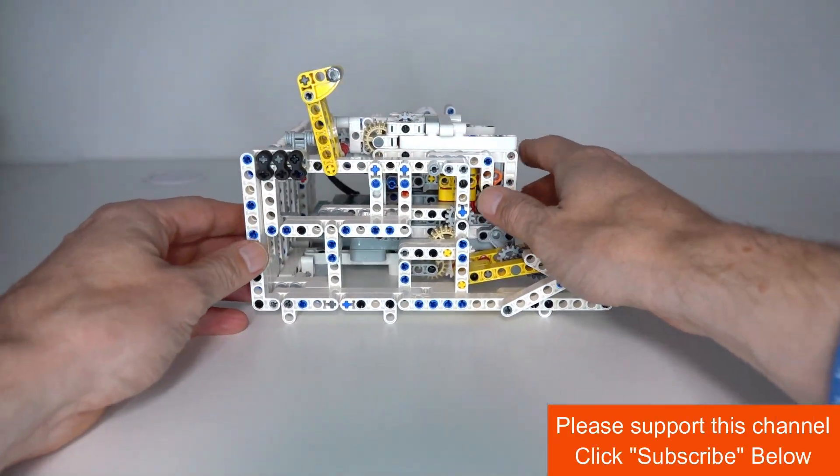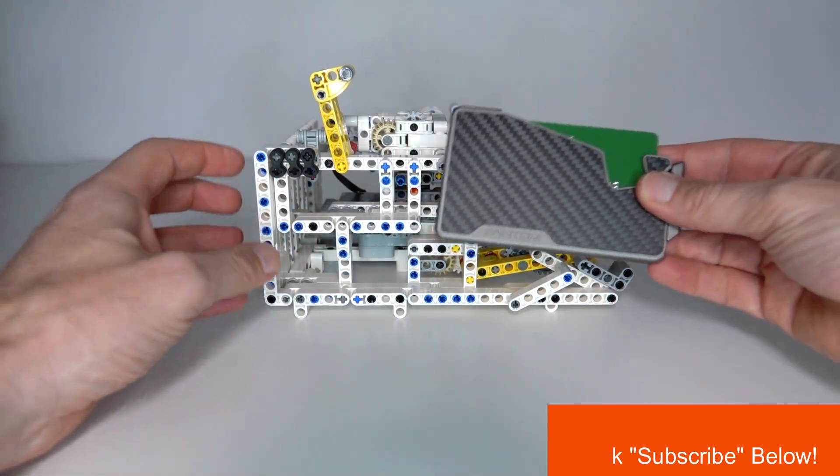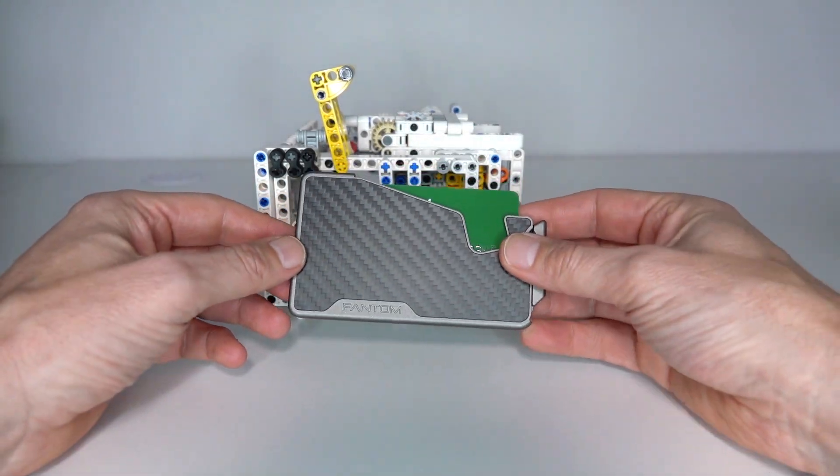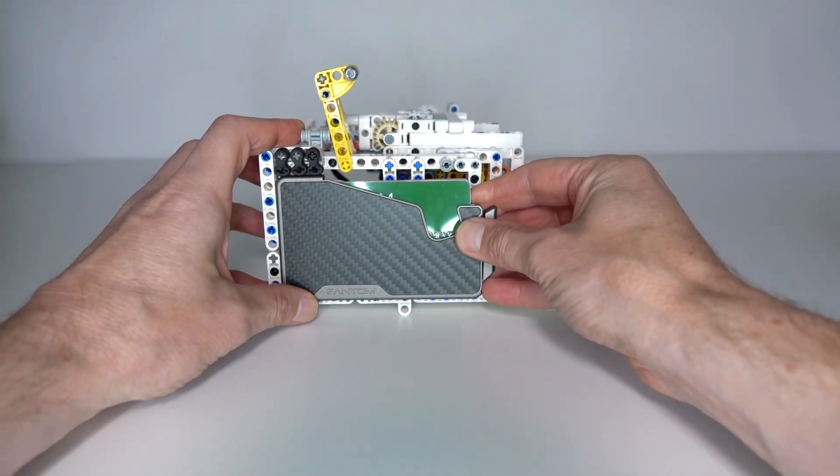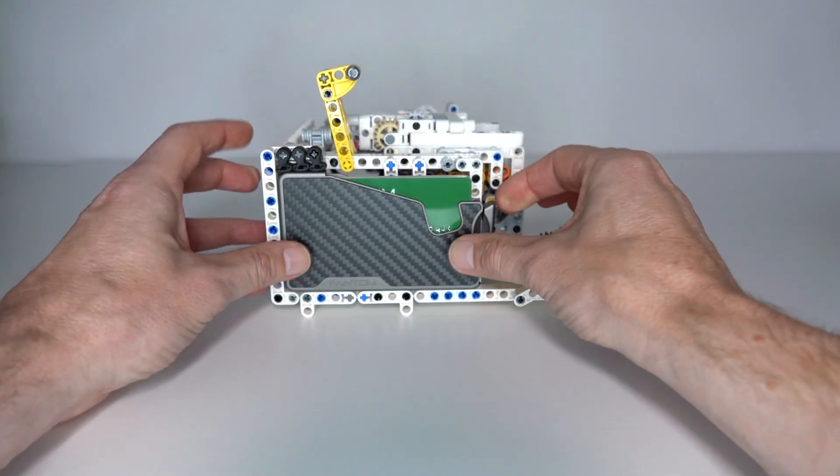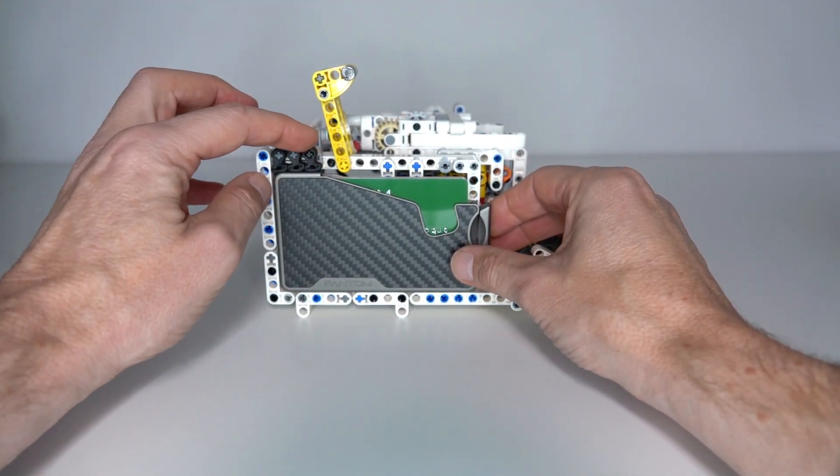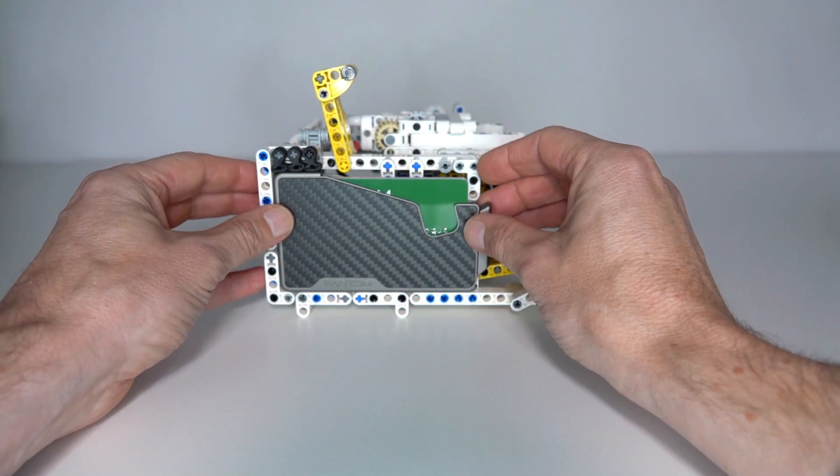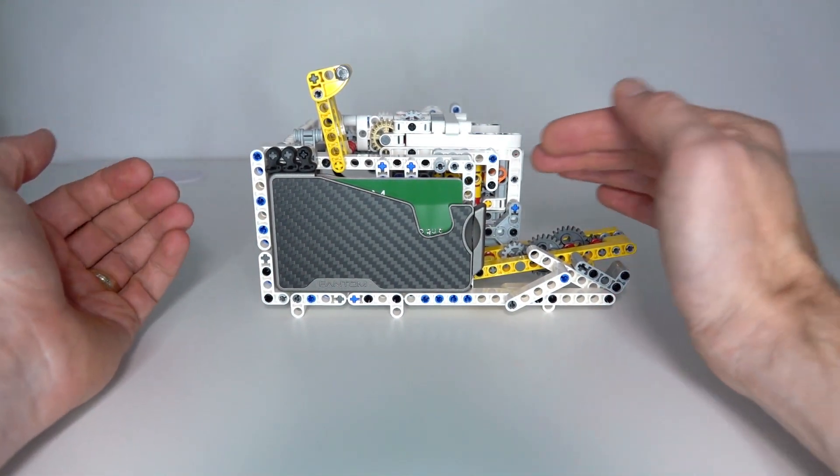The first problem I needed to solve was to actually design a framing to hold the phantom wallet. That was fairly straightforward. The dimensions of the phantom wallet are pretty similar to Lego Technic dimensions, so I managed to fit it in here quite nicely. I'm using these rubber components just to hold it in there.